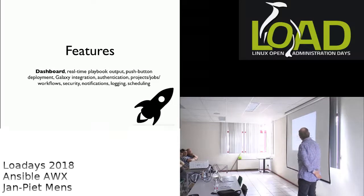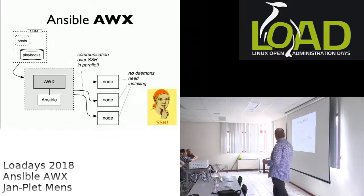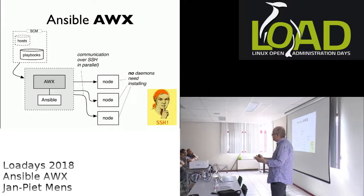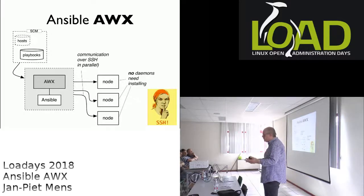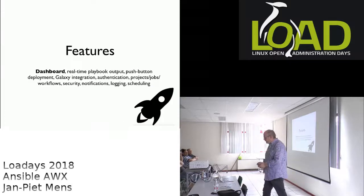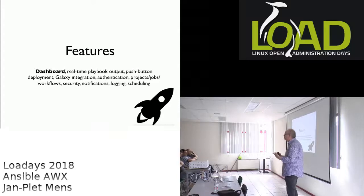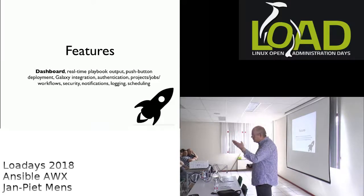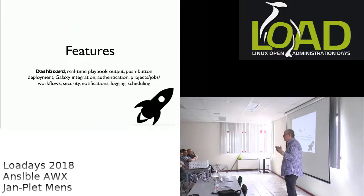AWX also has a scheduler — basically a glorified cron. I call it glorified because we can specify start date and end date: start on the 1st of December, end on the 23rd of December, every three hours. Using AWX means we now have a management server that is there 24 by 7. All these things are also controllable and creatable via the API — I will say that another 12,000 times.